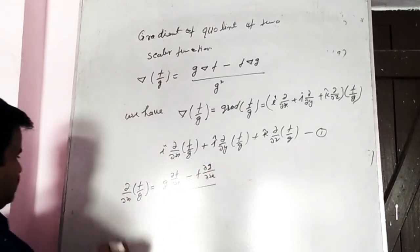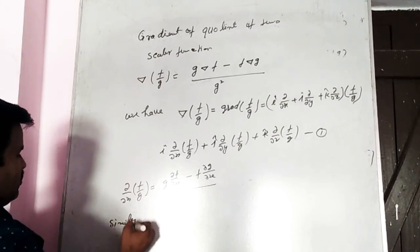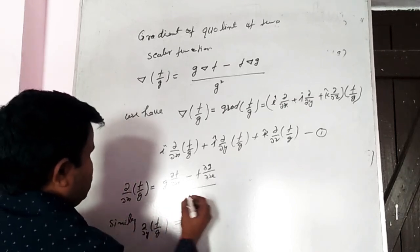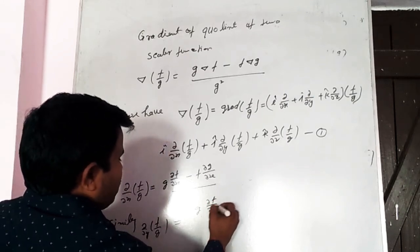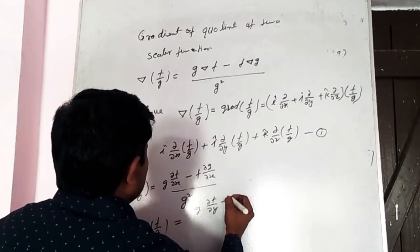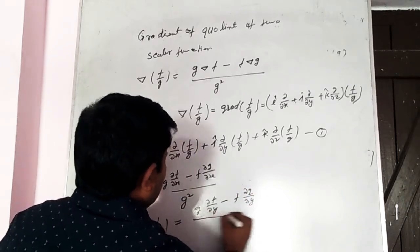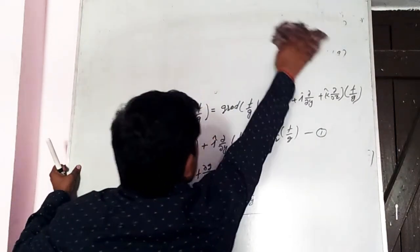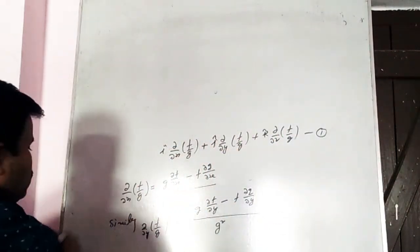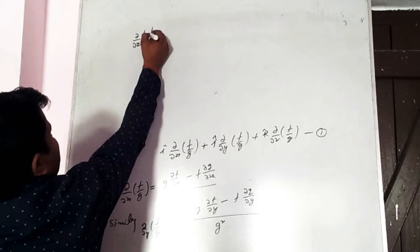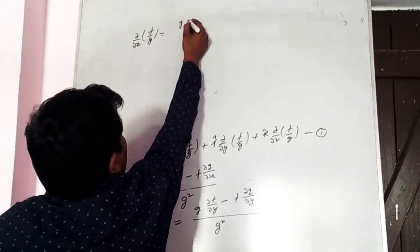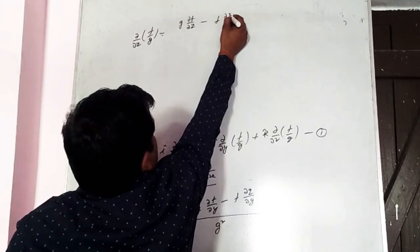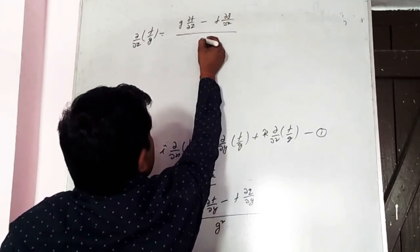Similarly, ∂(f/g)/∂y = [g ∂f/∂y − f ∂g/∂y] / g², and ∂(f/g)/∂z = [g ∂f/∂z − f ∂g/∂z] / g². Putting these values into equation one: